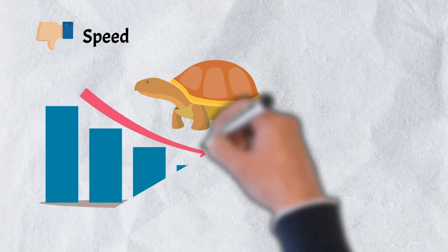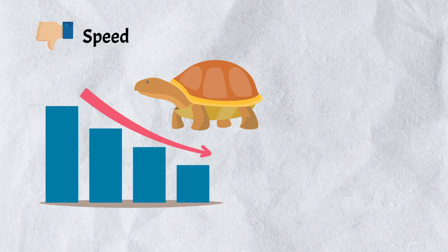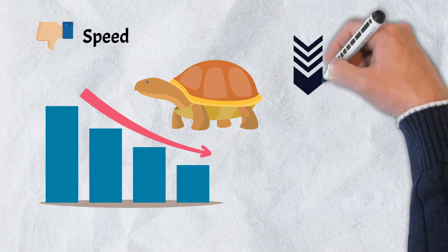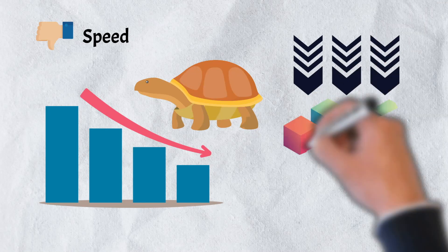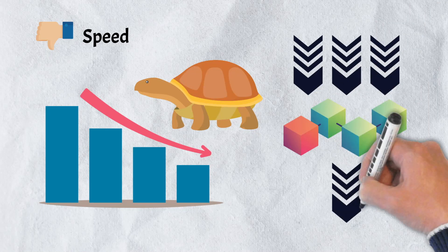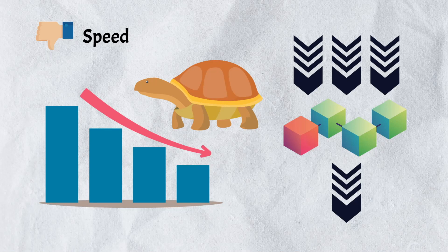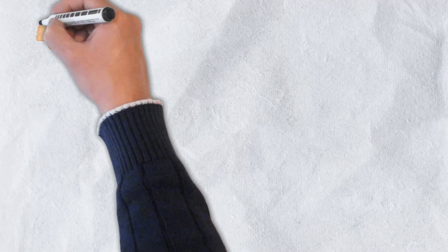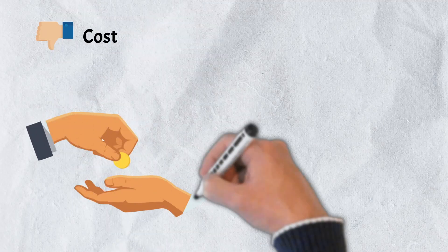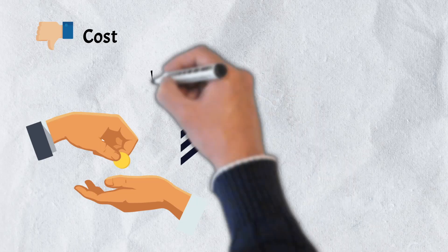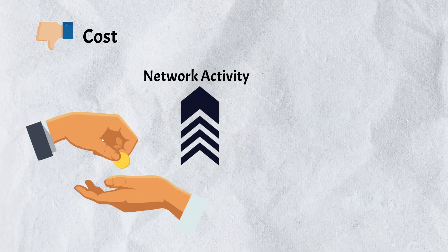On the flip side, dApp networks do have a few drawbacks. Speed is one of these — although a number of projects have been developed to address the speed and scalability of blockchain networks, it remains a problem. Most blockchain networks today struggle to keep up with large volumes of transaction data, leading to network congestion. When networks become congested, it leads to another issue: cost.